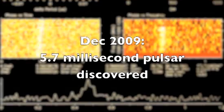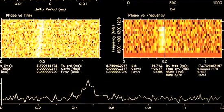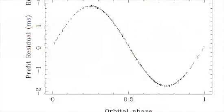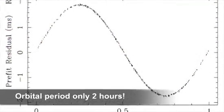In 2009 a 5.7 millisecond pulsar was discovered on our supercomputers and our colleagues at Jodrell Bank soon realized that this star was orbiting another object every two hours.